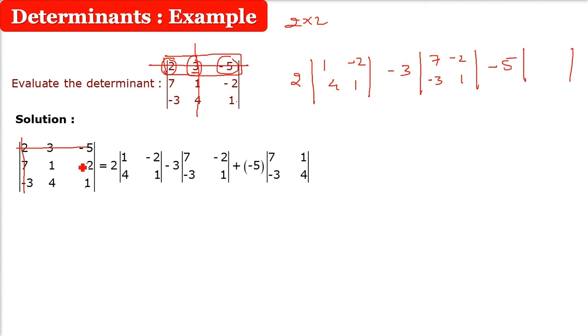Now when you come to minus 5, the row and column intersecting with minus 5, you have to leave. Whatever is remaining: 7, 1, negative 3, 4. Just write it here. 7, 1, negative 3, 1 and 4.